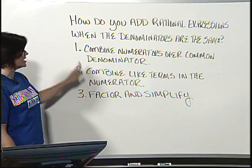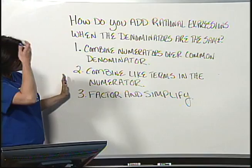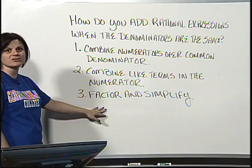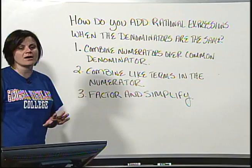So all you have to do in this situation is combine your numerators over your common denominator. You're going to combine all the like terms in the numerators and then finish it off by factoring and simplifying if possible.